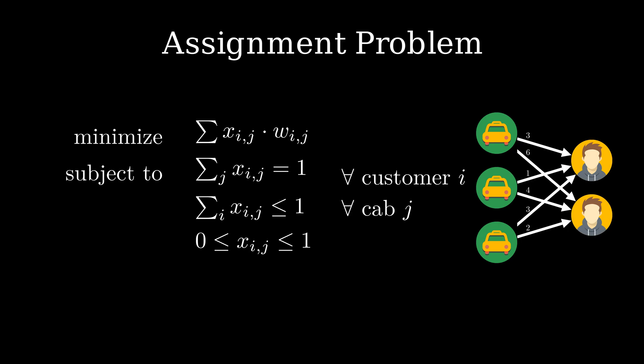In other words, just solving this linear program is guaranteed to give us a solution where every indicator variable is either 0 or 1.